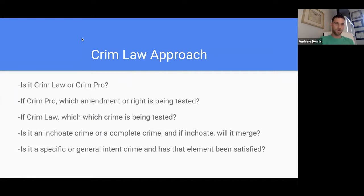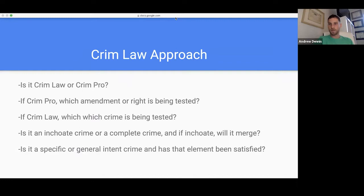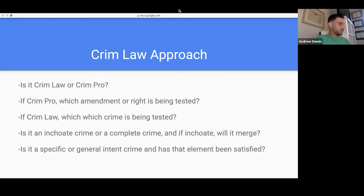Criminal law is split between crim pro and crim law, which makes it interesting. They can only test about 12 or 13 questions for each subject. In law school, crim pro and substantive criminal law were different classes — two separate classes tested in one. That's why I think it's one of the easier subjects, because if you know the basic laws, you should be able to get most of the questions right.